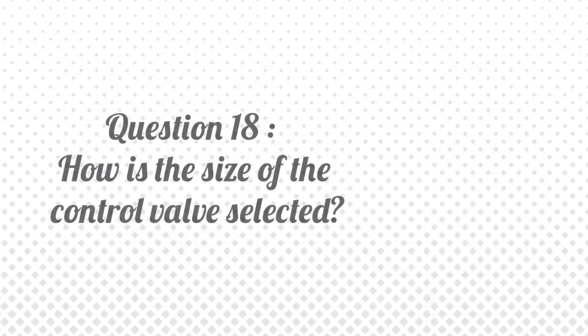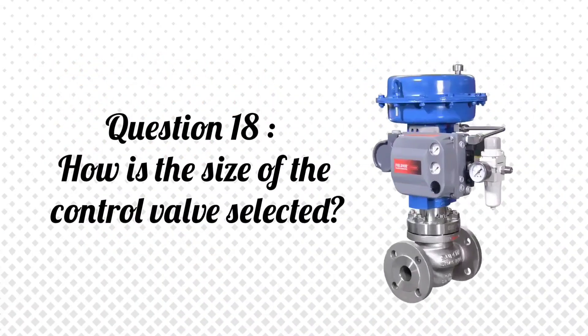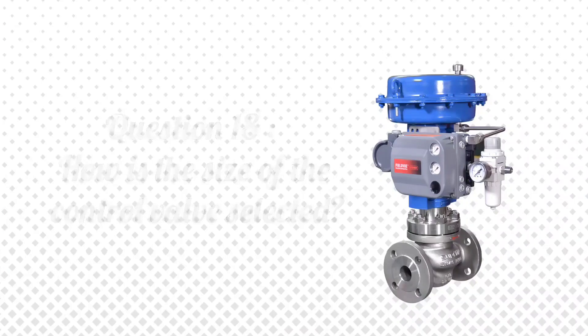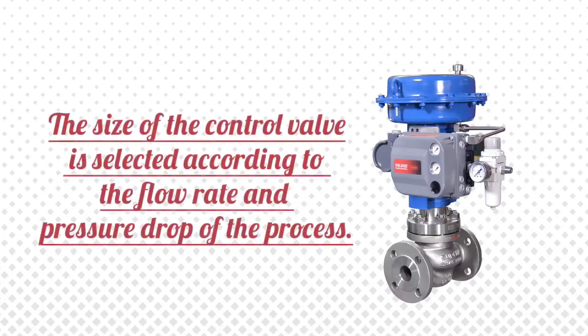Question 18: How is the size of a control valve selected? Answer: The size of a control valve is selected according to the flow rate and pressure drop of the process.